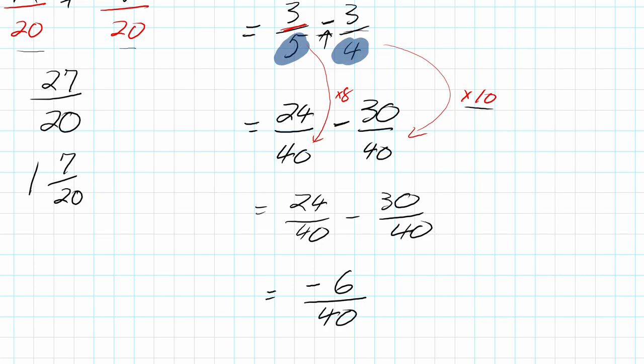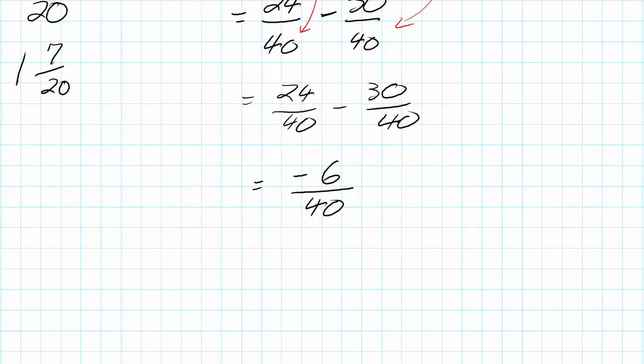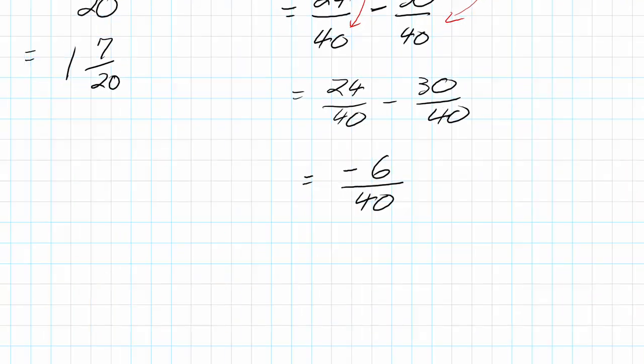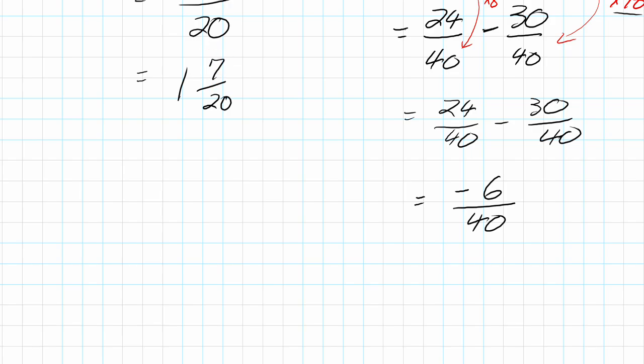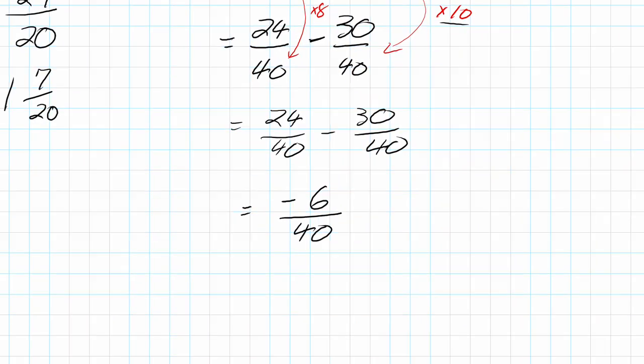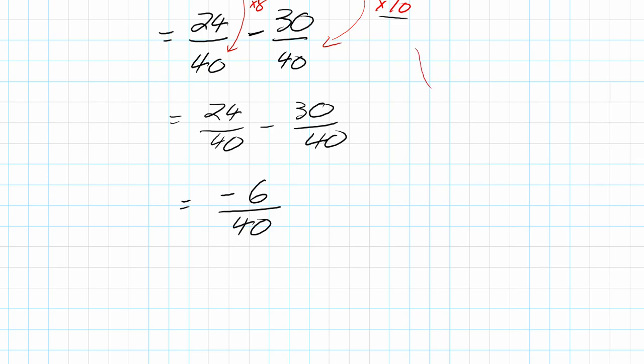The last piece is reducing this fraction. The other one couldn't be reduced because 7 is prime. This one, though—both are even, so we can divide by 2. Just like we multiplied both top and bottom by the same number earlier, we're going to divide both numerator and denominator by 2. Negative 6 divided by 2 gives negative 3, and 40 divided by 2 gives 20. Look at that, we're back at denominator 20. Even if we use a value that wasn't the lowest common multiple, we can still get lowest terms by reducing in the end.